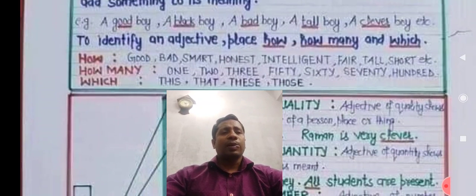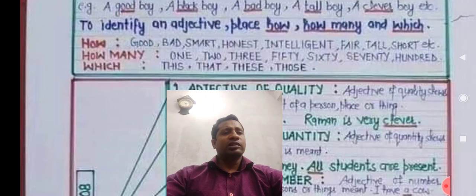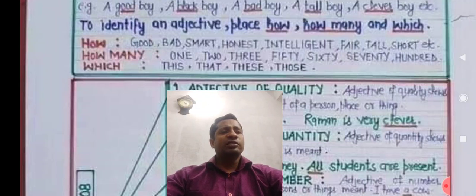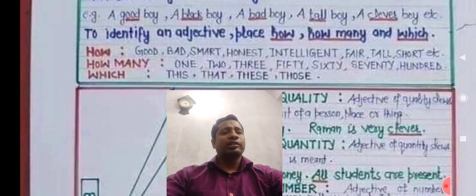Dear students, words like good, bad, smart, honest, intelligent, fair, tall, short — these represent the quality of a word. If the quality of a noun is described, that word is an adjective.